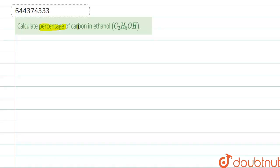Calculate percentage of carbon in ethanol, that is C2H5OH. So here that is given C2H5OH, so first we calculate the molecular mass of C2H5OH.